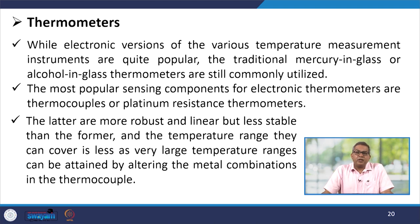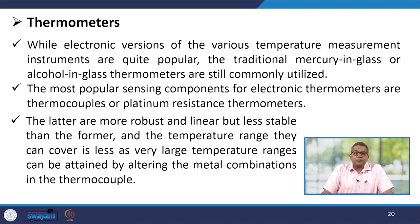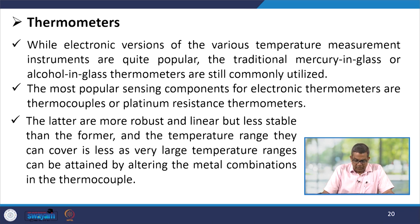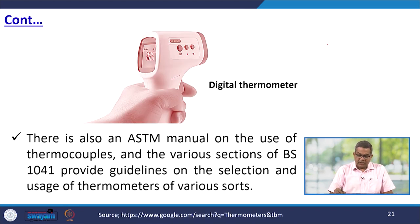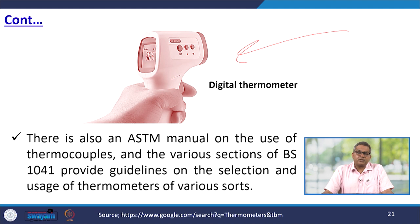Let us talk about the thermometers. While electronic versions of various temperature measuring devices are quite popular, traditional mercury-in-glass or alcohol-in-glass thermometers are still commonly utilized. The most popular sensing components for electronic thermometers are thermocouples or platinum resistance thermometers. Thermocouples are robust and linear but less stable, and a very large temperature range can be attained by altering the metal combination. Digital thermometers are becoming more popular, and ASTM and ISO manuals as well as British Standards provide guidelines for their selection and use.